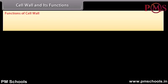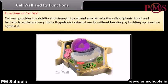The cell wall provides rigidity and strength to the cell. It also permits the cells of plants, fungi, and bacteria to withstand very dilute hypotonic external media without bursting, by building up pressure against it.